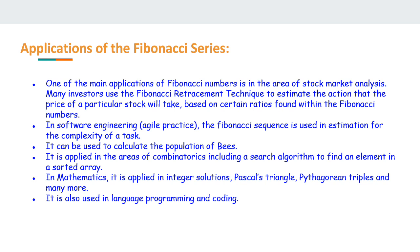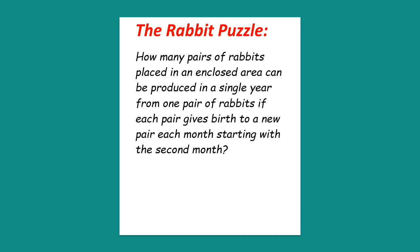Now I've got a puzzle for you. Let's see if we can figure it out. You can pause the video and try to figure out the answer. How many pairs of rabbits placed in an enclosed area can be produced in a single year from one pair of rabbits, if each pair gives birth to a new pair each month starting with the second month?